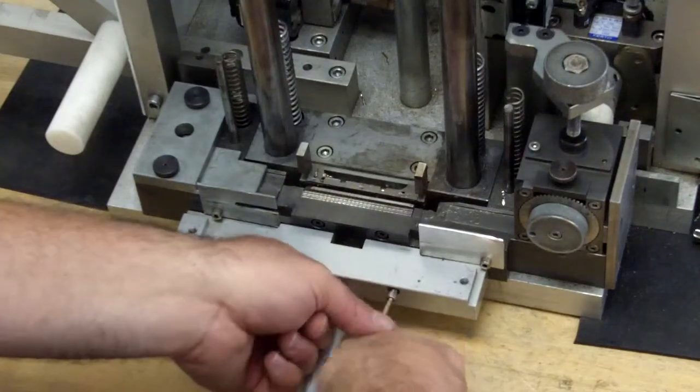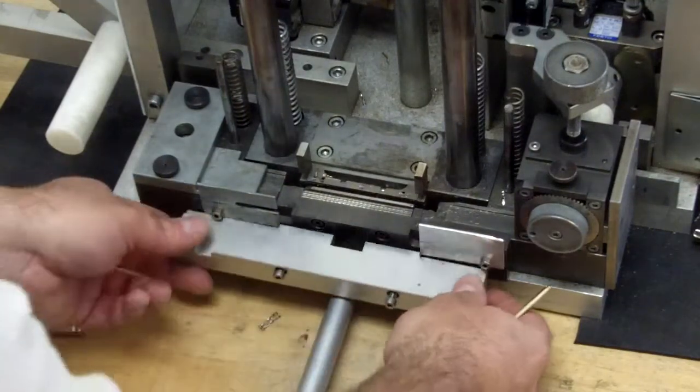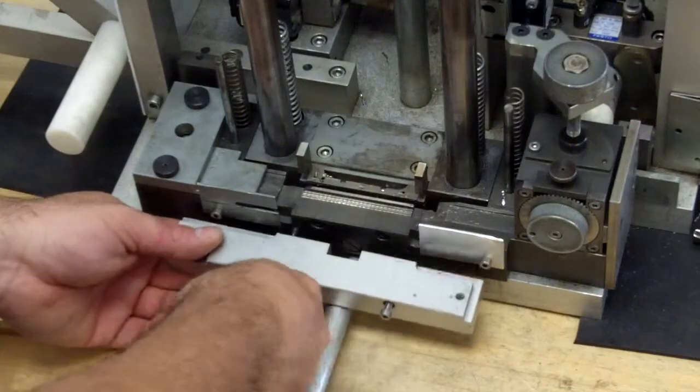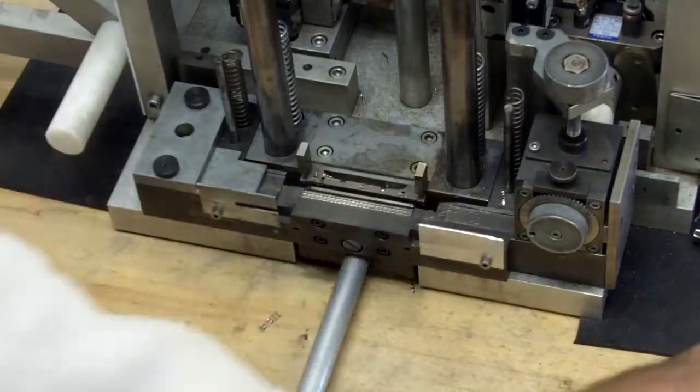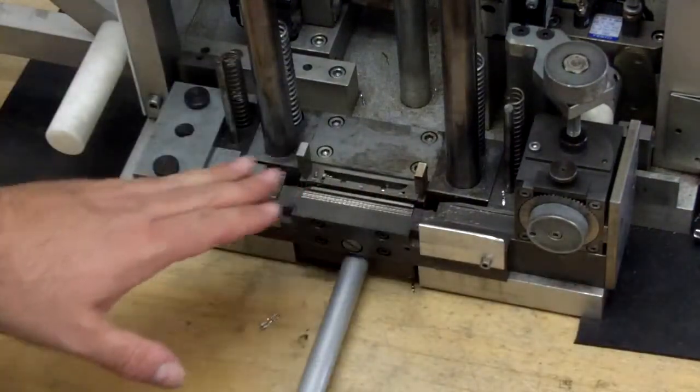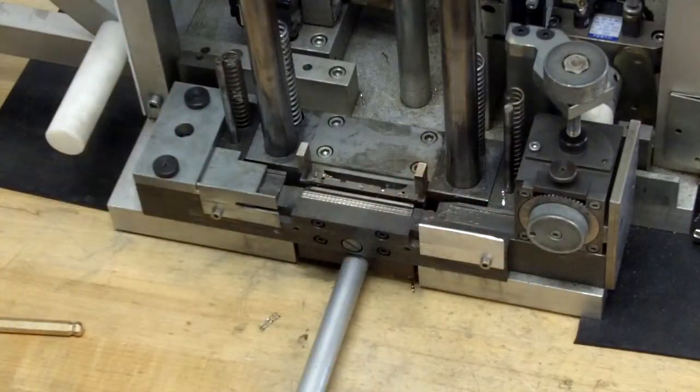We remove the work table and table support not for ease of access, but we want to remove unnecessary weight from the front of the machine, as that can cause the base of the machine to tear when we're changing the shims.